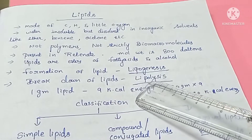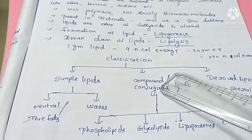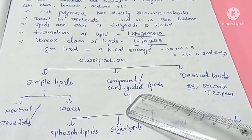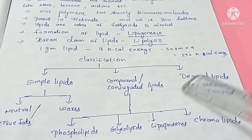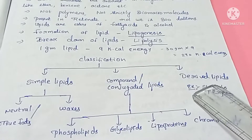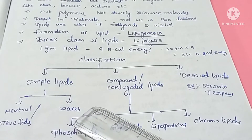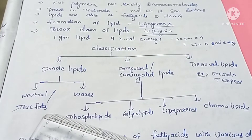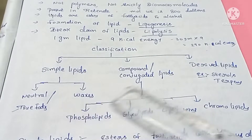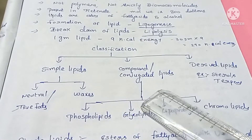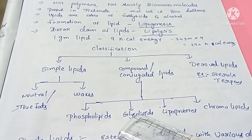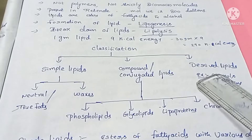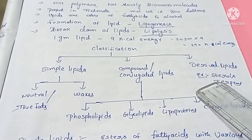Classification of lipids: lipids are of 3 types — simple lipids, compound or conjugated lipids, and derived lipids. Compound or conjugated lipids have 4 types: phospholipids, glycolipids, lipoproteins, and chromolipids. Derived lipids include sterols and prostaglandins.